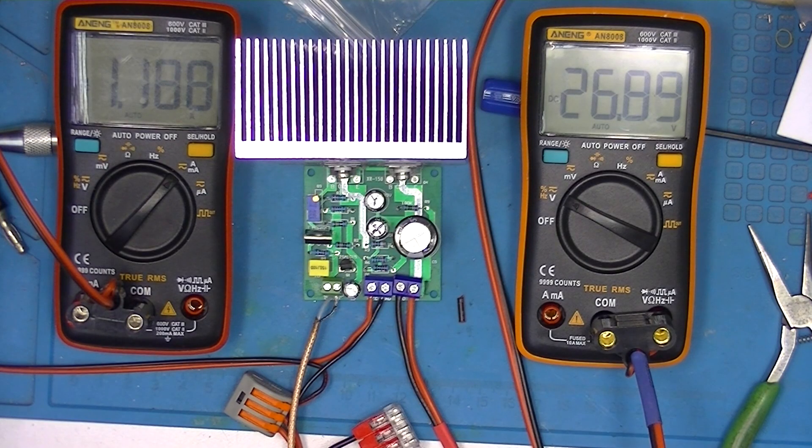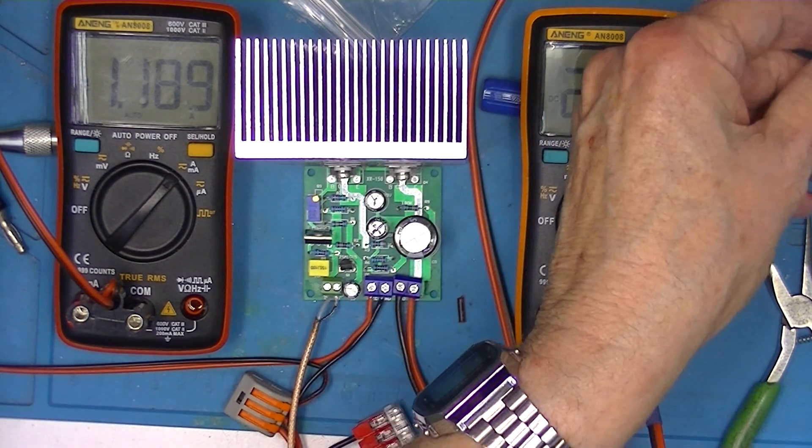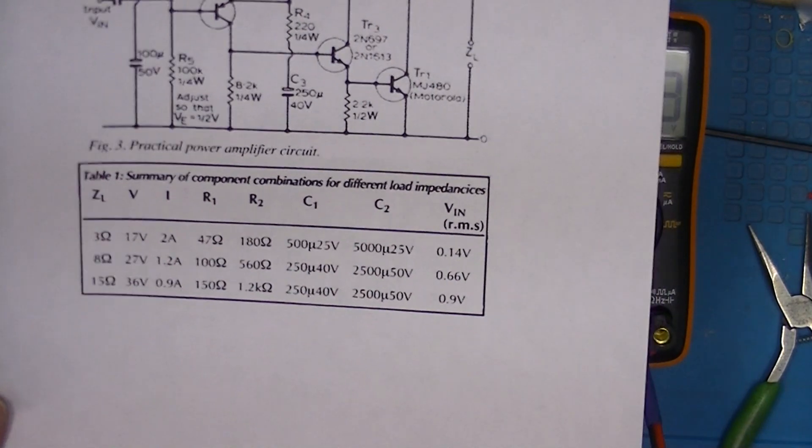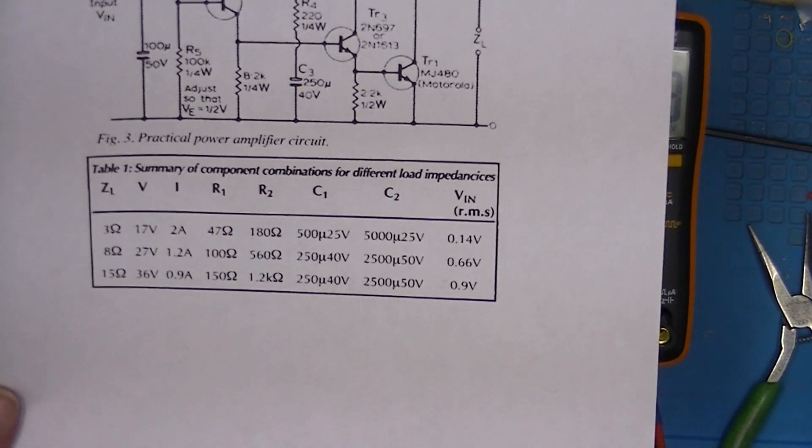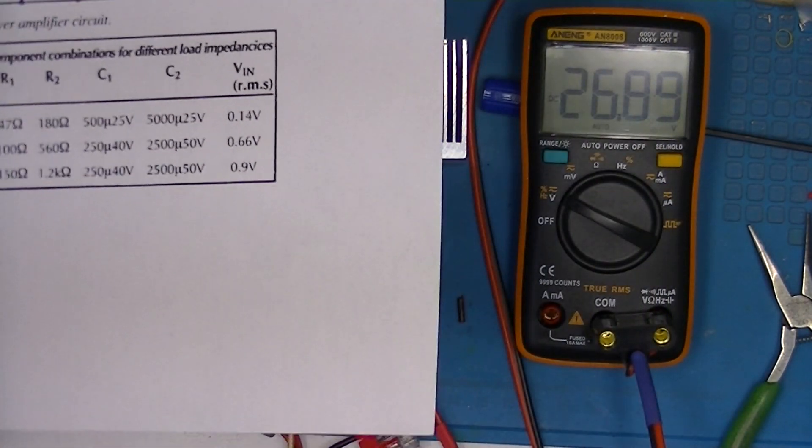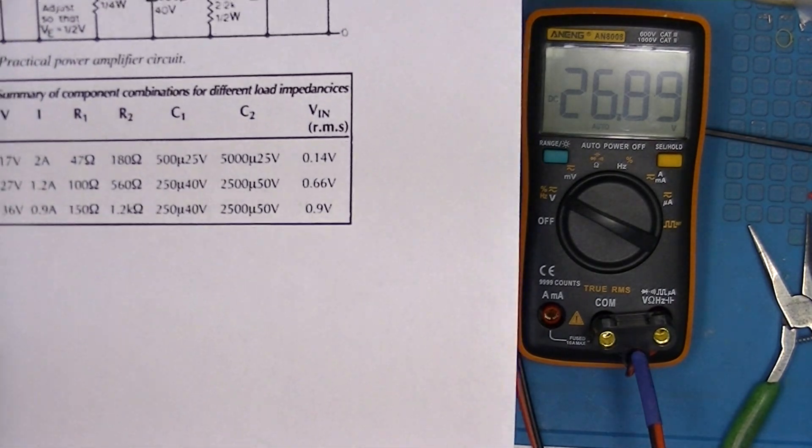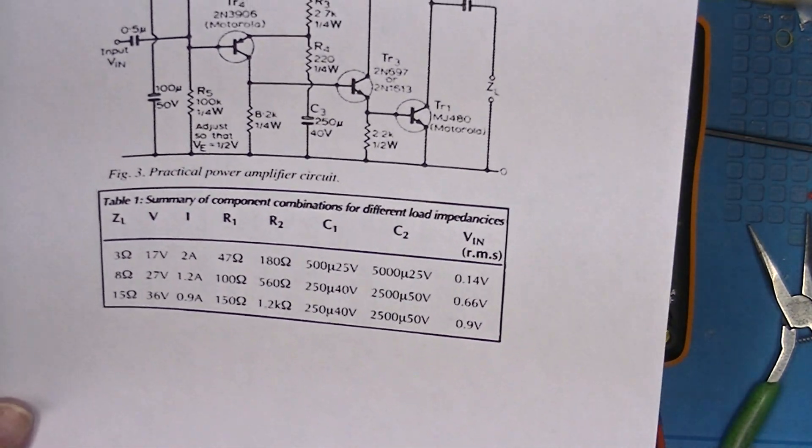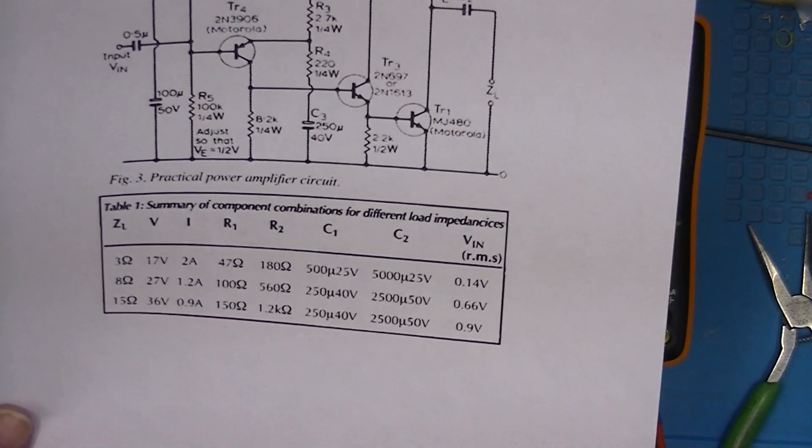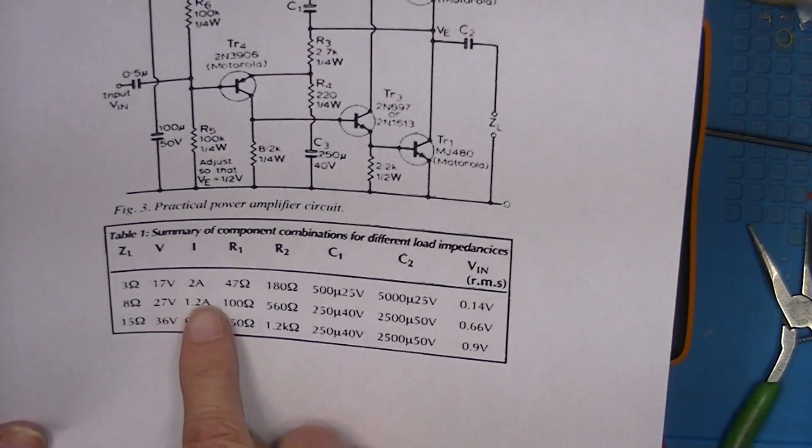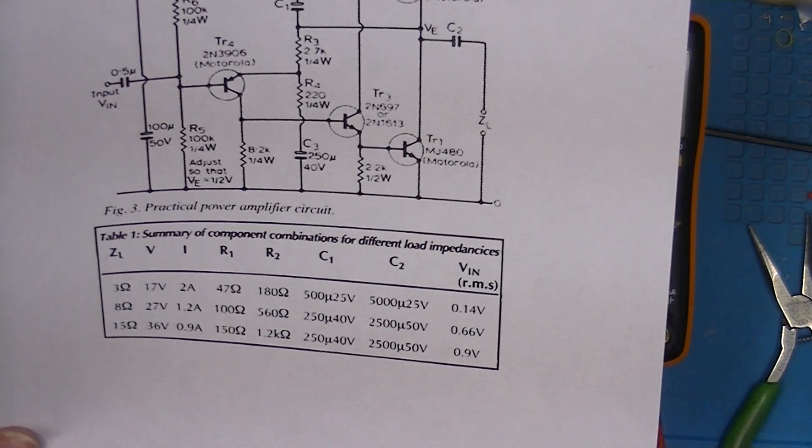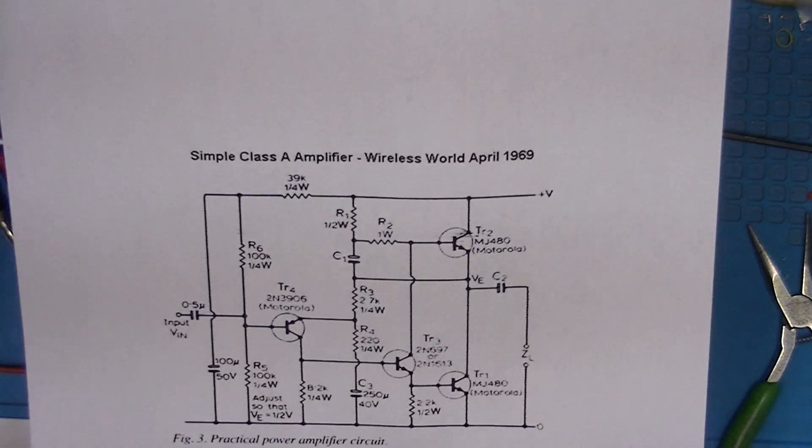This is what the test setup looks like. According to the original article at 8 ohms, which I have 8 ohms on the output, I should adjust it for 27 volts and 1.2 amps. Take note to this.